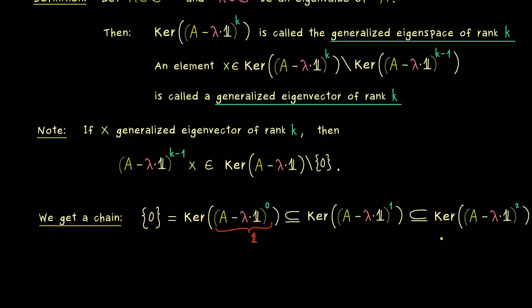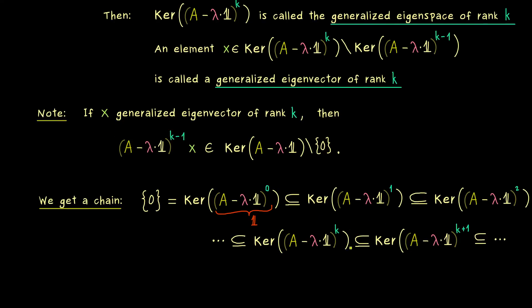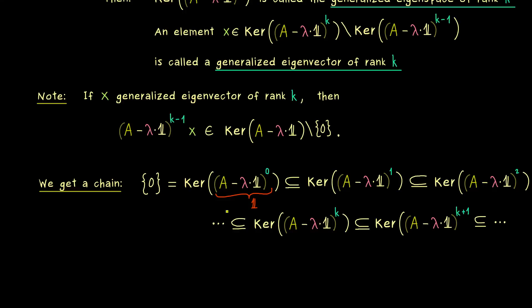However there it could definitely happen that the space stays exactly the same which means we only have the subset relation that includes equality as well. So in general we cannot say more but we definitely always have the subset relation if we increase the index k. So we could write if we go from k to k plus 1 we have this inclusion. So this means we could increase the index as much as we want but at some point nothing will happen anymore.